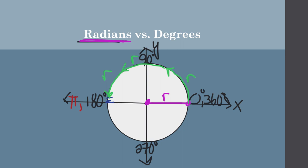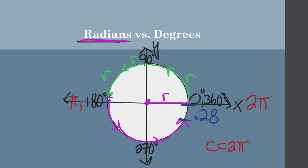Continuing around the circle: add another radius, another radius, another radius, and a little bit extra — from here to here would be about 0.28, which gives us 6.28 to go all the way around. So radians are basically how many radii go around the circle — and there are 6.28: 1, 2, 3, 4, 5, 6, and 0.28. This is where we get the circumference formula: 2 times pi times the radius. The key takeaway is that one half circle, or 180 degrees, represents pi; or 360 is 2 pi.